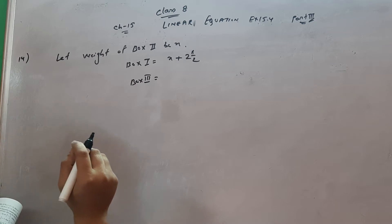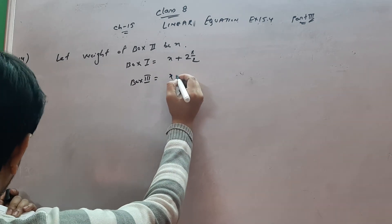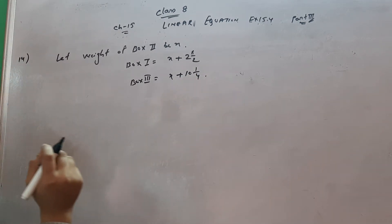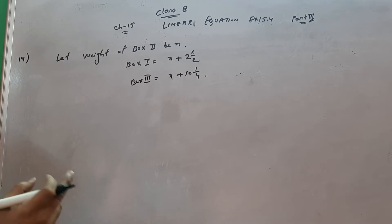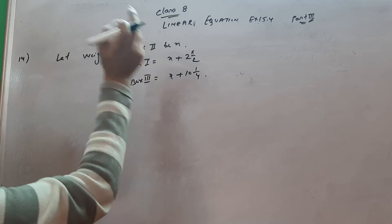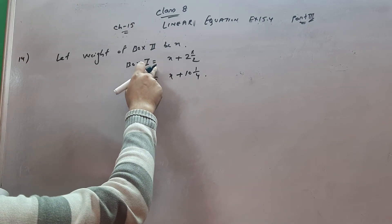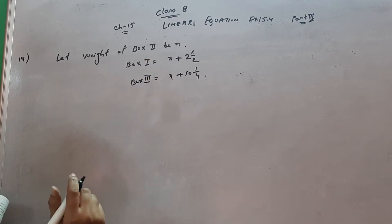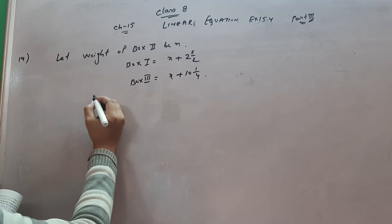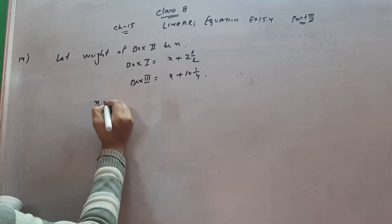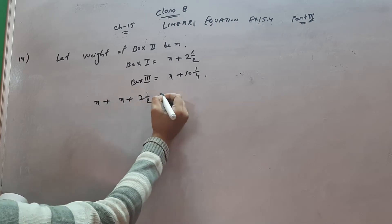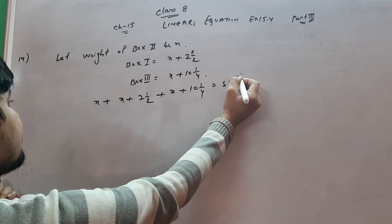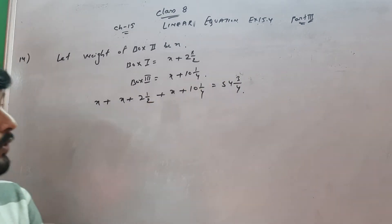Box three weight is 10 and 1/4 kg more than box two — meaning box two ka jitna wajan hai, usse 10 and 1/4 zyada hai. So box three weight equals x plus 10 and 1/4. Now find the weight of box one. Total weight of all three boxes is given as 54 and 3/4 kg. Box two ka weight, box one ka weight, box three ka weight — teeno ko add karenge.